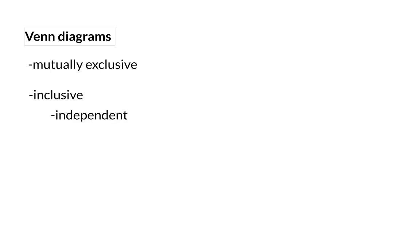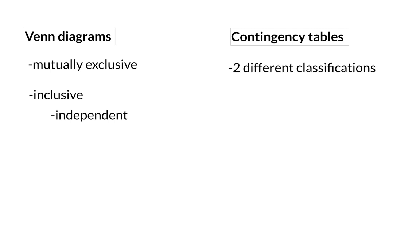Next, we had a look at two-way contingency tables, which are useful when a set of data is classified according to two different classifications. Today, we are going to have a look at tree diagrams, and tree diagrams can only be used for inclusive events. These events can be one event that is repeated, or events that happen one after the other, or even simultaneously.